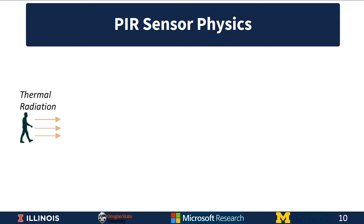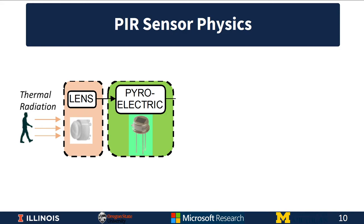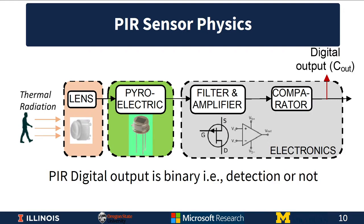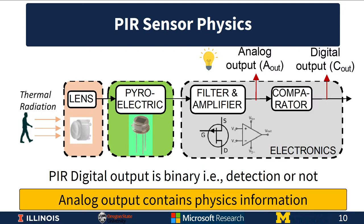Let us consider the sensor physics of a PIR sensor. A human obstacle walks across the field of view of a PIR sensor, radiating thermal radiation. The thermal radiation is concentrated by the lens onto a pyroelectric element, which converts the heat radiation into an electrical signal. This electrical signal is then sent to an electronic subsystem comprising a filter, an amplifier, and a comparator. Note that prior to the comparator, there is an analog output that contains additional physics information as it passes through the pipeline of lens, pyroelectric element, and electronic subsystem.